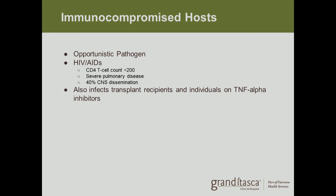An important population is immunocompromised hosts, for whom blastomycosis can act as an opportunistic pathogen — infecting those whose immune systems are not working properly. A key group is people with HIV or AIDS who have a low CD4 T cell count; they most likely have severe pulmonary disease and can also get CNS dissemination 40 percent of the time. Transplant recipients and people on TNF-alpha inhibitors — such as those treated for rheumatoid arthritis — are also at increased risk.